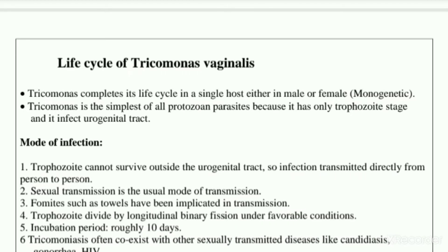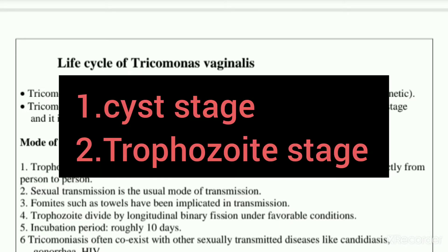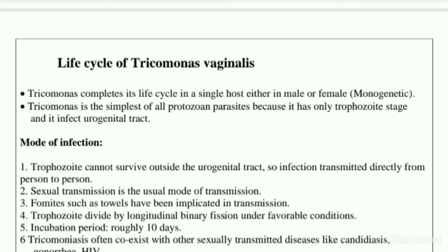Trichomonas vaginalis is the simplest of all parasitic protozoans because it has only the trophozoite stage. Usually parasitic protozoans have two stages in their life cycle — the cyst stage and the trophozoite stage — but in case of Trichomonas vaginalis we can see only the trophozoite stage. It infects the urogenital tract.